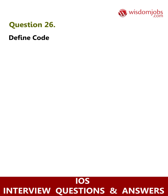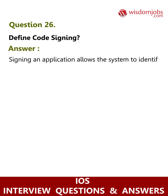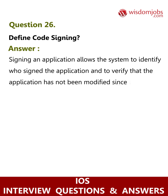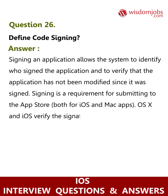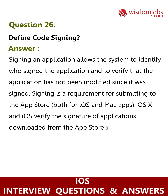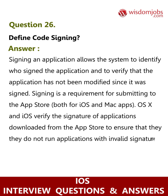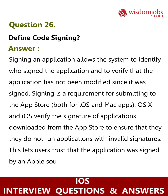Question 26: Define code signing. Answer: Signing an application allows the system to identify who signed the application and to verify that the application has not been modified since it was signed. Signing is a requirement for submitting to the App Store, both for iOS and Mac apps. OS X and iOS verify the signature of applications downloaded from the App Store to ensure they do not run applications with invalid signatures. This lets users trust that the application was signed by an Apple source and has not been modified since it was signed.